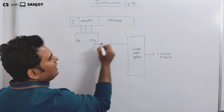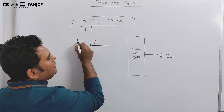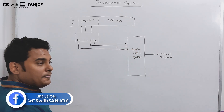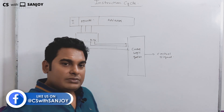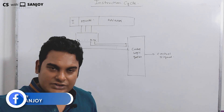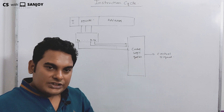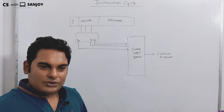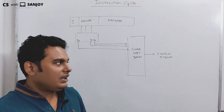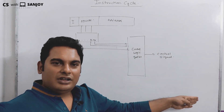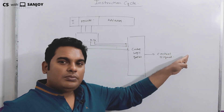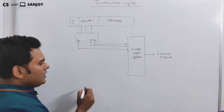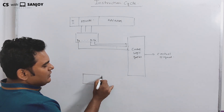D0 to D7 is the decoded output of the control logic gates. A program is nothing but a sequence or collection of instructions. These instructions execute one after another sequentially. There is a sequence counter that maintains this sequential order.